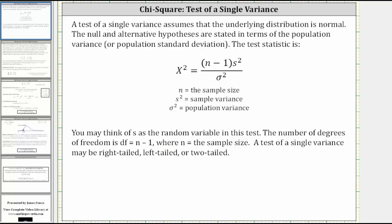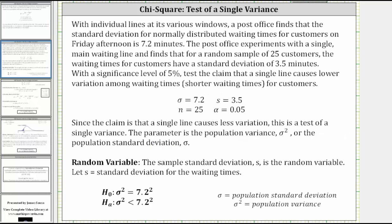Let's take a look at an example. With individual lines at its various windows, a post office finds that the standard deviation for normally distributed waiting times for customers on Friday afternoon is 7.2 minutes. The post office experiments with a single main waiting line and finds that for a random sample of 25 customers, the waiting times for customers have a standard deviation of 3.5 minutes. With a significance level of 5%, test the claim that a single line causes lower variation among waiting times or shorter waiting times for customers.